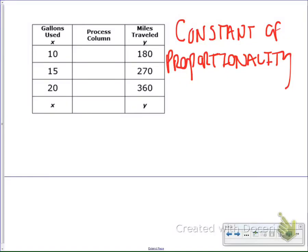What I want to talk about real quick now is what we call the constant of proportionality. This is something that's going to help us when we're trying to look and see if a table or a graph or any kind of relationship is going to be proportional or non-proportional.